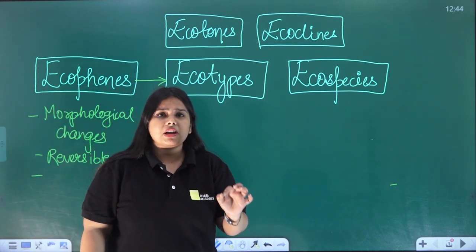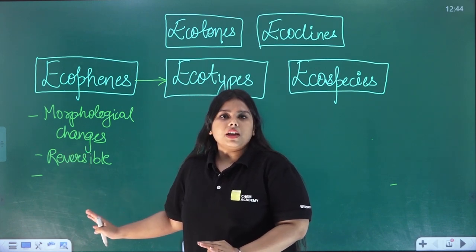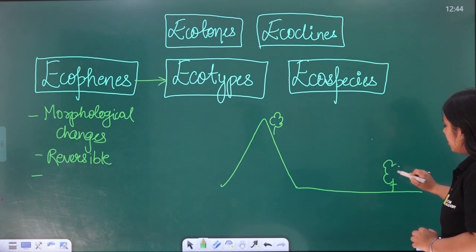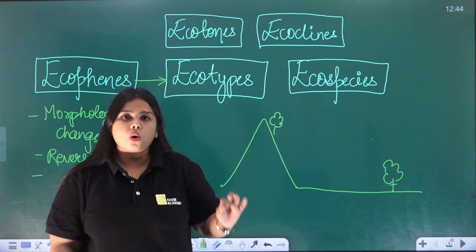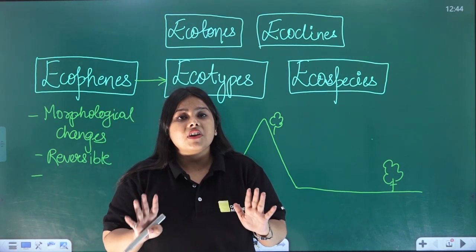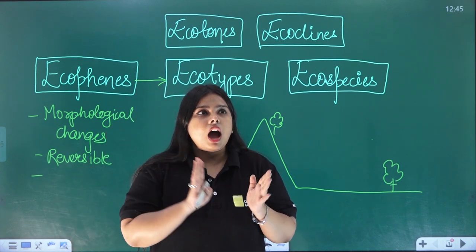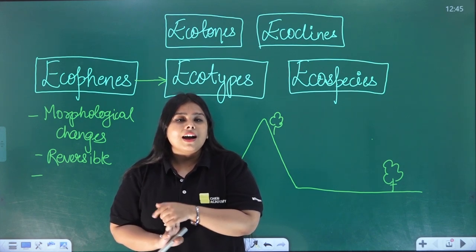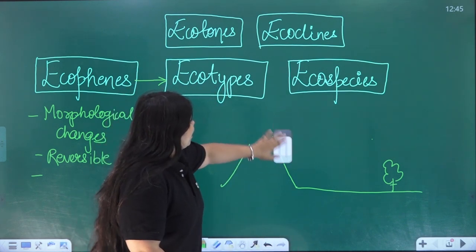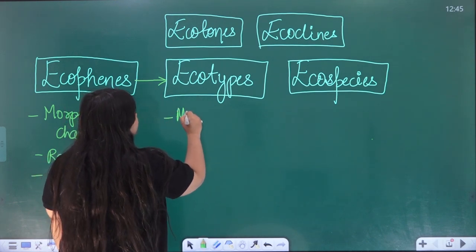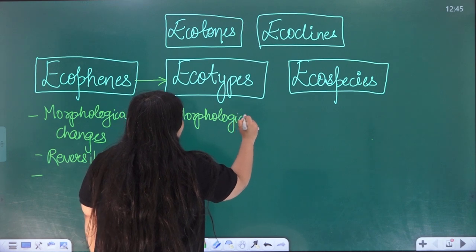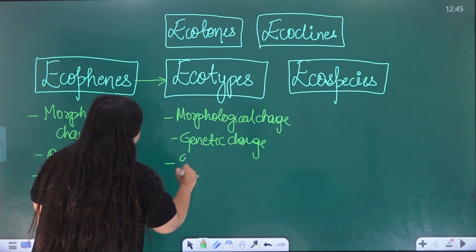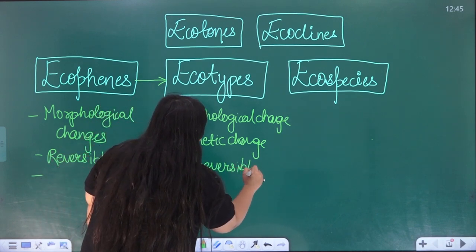Now, when this mountain plant and this lowland plant are in different situations over a particular period of time, these changes become fixed at the genetic level. If it is fixed at the genetic level, then it is irreversible — morphological change plus genetic change, and irreversible.